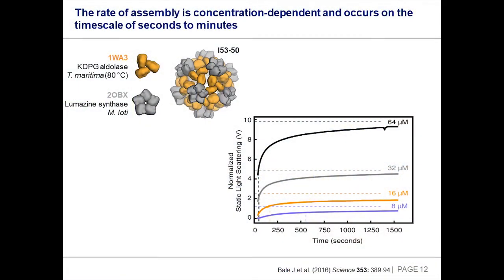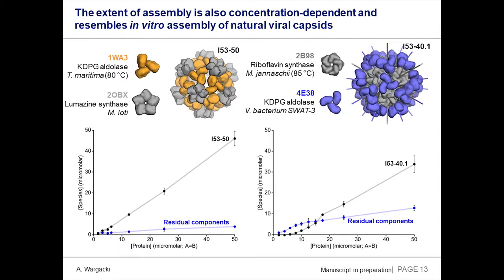The kinetics of assembly are fairly rapid. At double-digit micromolar concentrations, assembly is half complete within a few seconds, and it's highly protein-concentration dependent as you would expect for this type of structure. The extent of assembly is also concentration dependent. You get curves that mirror those from natural virus capsids, where you have an appreciable amount of residual components left at very low concentration, but at some point you get a crossover where the particle starts to dominate.